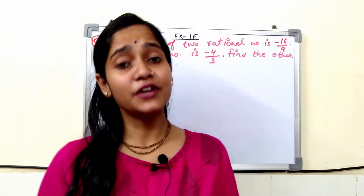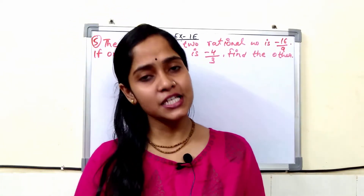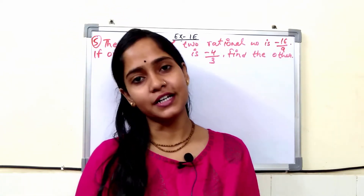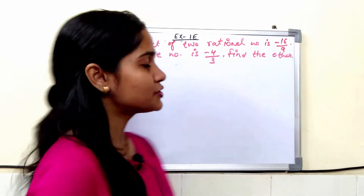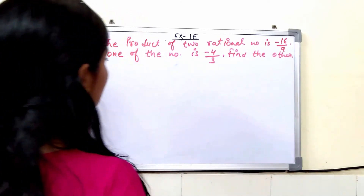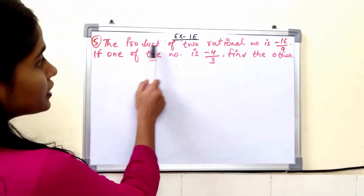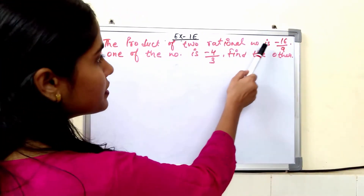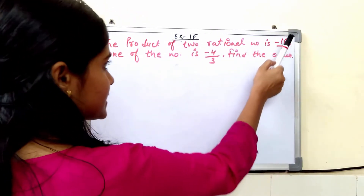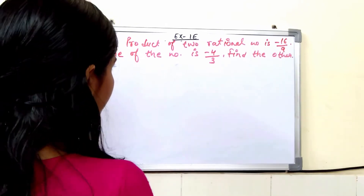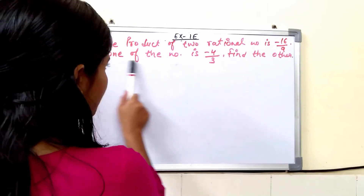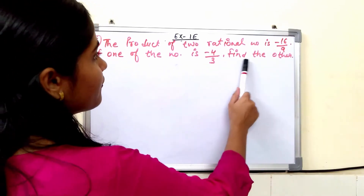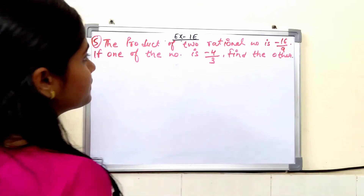Hello everyone. In this video, we will cover question number 5. The product of two rational numbers is minus 16 upon 9. If one of the numbers is minus 4 upon 3, find the other.